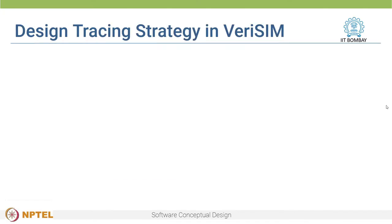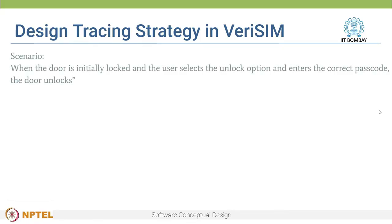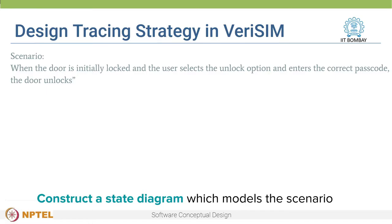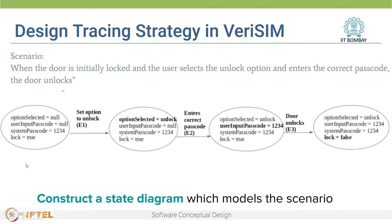In Verisim, you will be introduced to a strategy known as the design tracing strategy. Consider a scenario of the automated door locking system where the door is initially locked and the user selects the unlock option and enters the correct passcode. On doing this, the door should unlock. In design tracing, you construct a state diagram which models a given scenario. This state diagram models the transitions corresponding to parts of the scenario — the user selects the unlock option, enters the correct passcode, and finally the door unlocks.